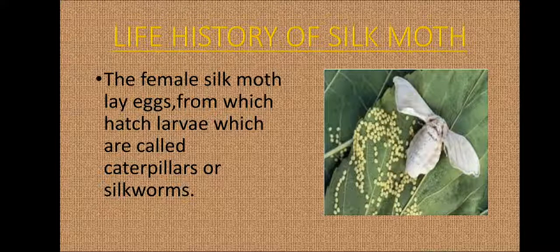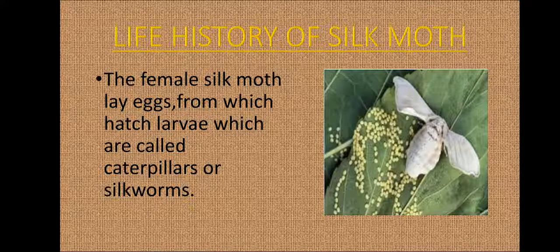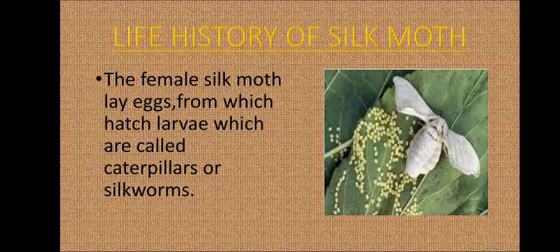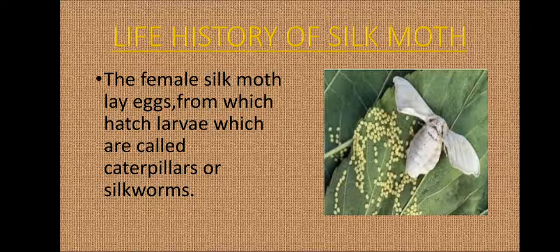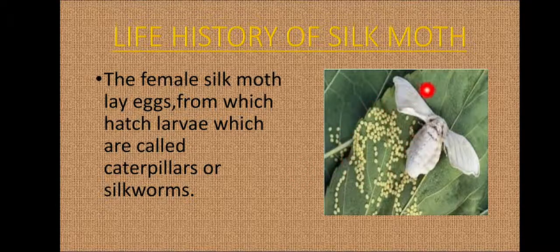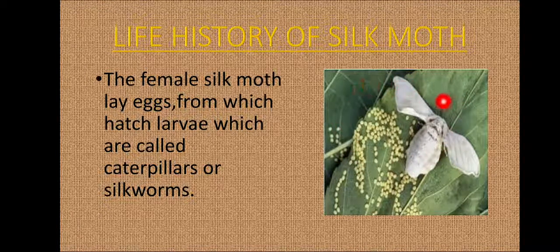Before we discuss the process of obtaining silk in detail, it is necessary to know about the interesting life cycle of the silk moth. The silk moth is the organism which is going to produce silk for us. In the first step, the female silk moth lays eggs from which hatch larvae, which are called caterpillars or silkworms. As you can see in the figure, eggs are laid over leaves.